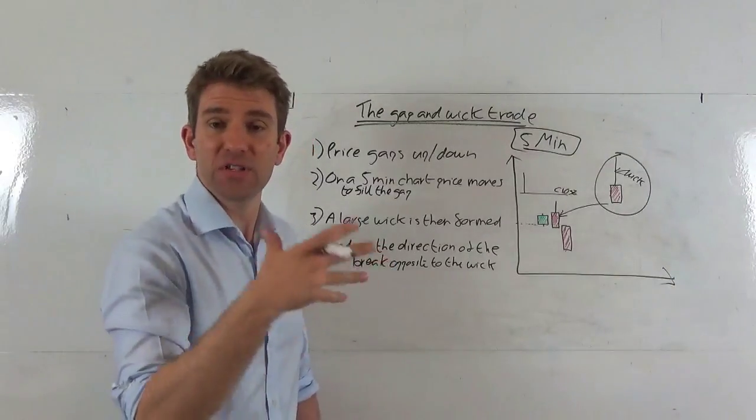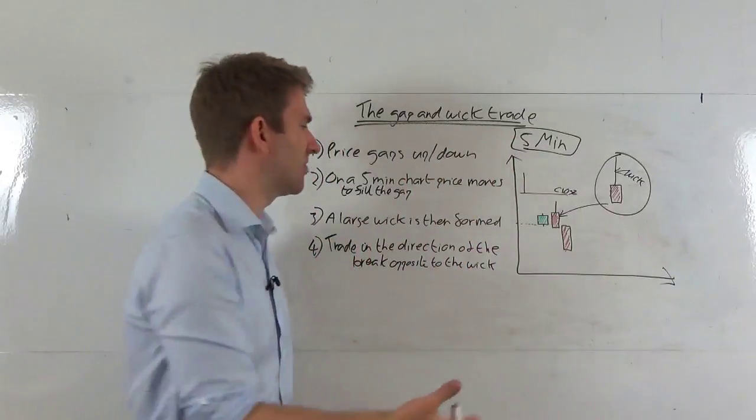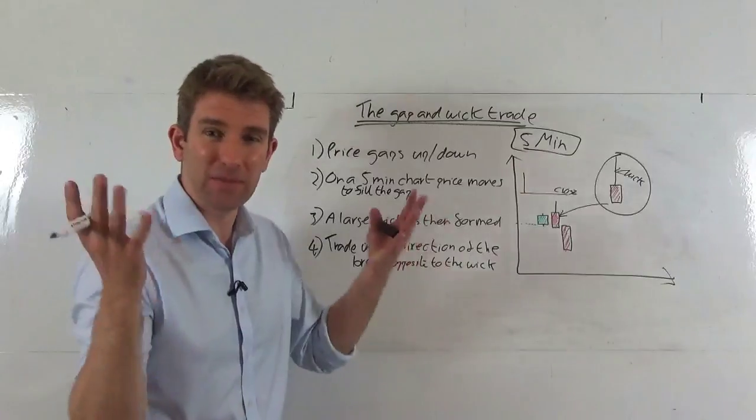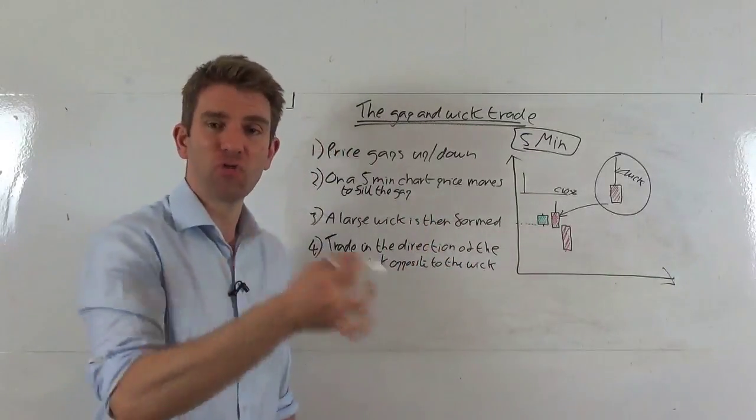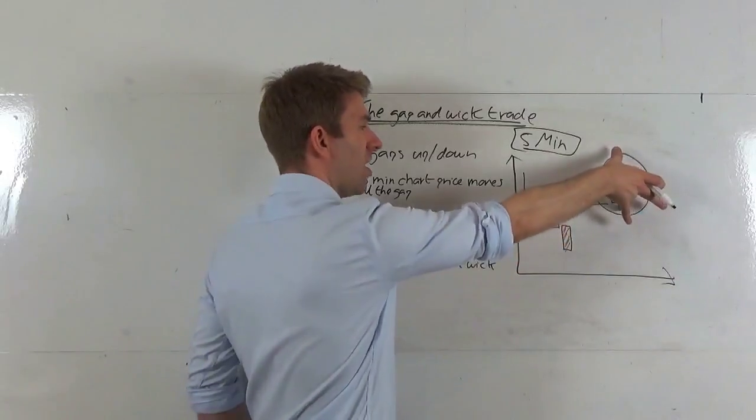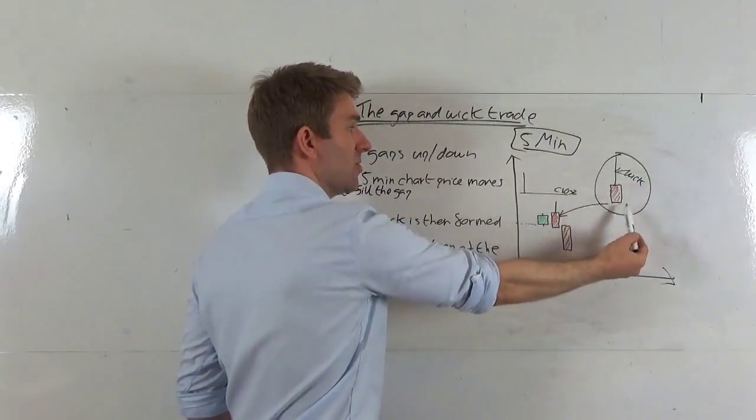And of course, for whatever reason, sentiment changes. Big sellers come in, institutions start dumping it, don't like what's happened, whatever it may be. Point is, we now get more aggressive selling coming in, drives that down, causes that large range and the wick. In other words, within the five minutes we print a high, but actually we close right at lows.